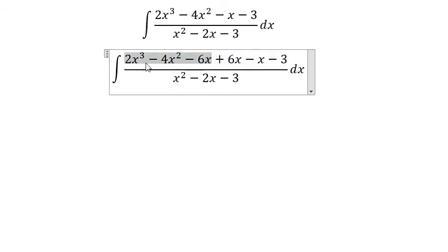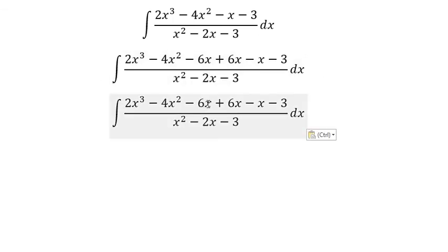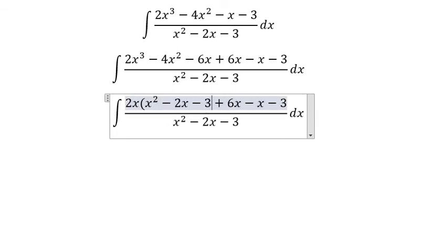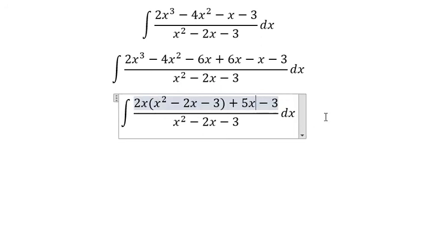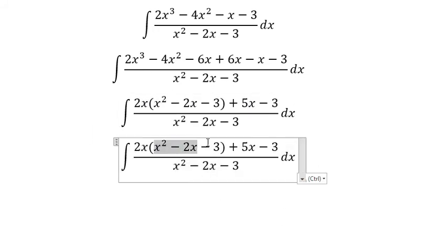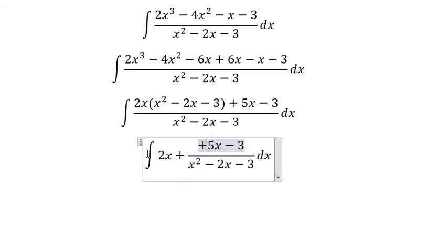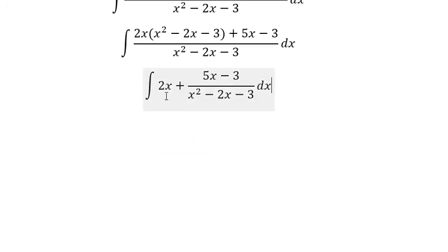We can divide this one, so we get 2x multiplied by (x² - 2x - 3), and this one goes to 5x. Divide this one, so we get 2x. The integral of 2x gives us x².